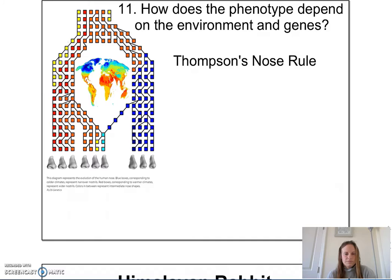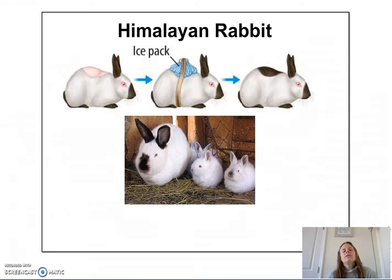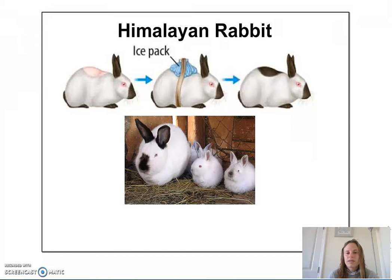Take a look at this Himalayan rabbit. The Himalayan rabbit is white with the exception of its ears, nose, and paws — its extremities are black. The Himalayan mountains where it lives are cold, and the dark color enables the extremities to absorb more light. Scientists did an experiment where they shaved part of the rabbit's back, put an ice pack on it, and the hair that grew back was black.